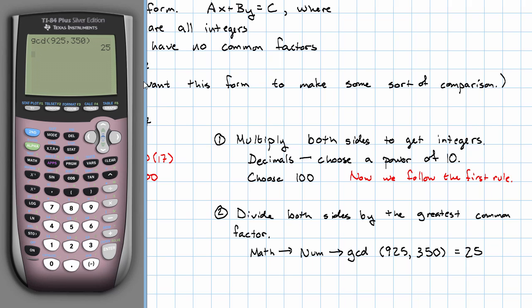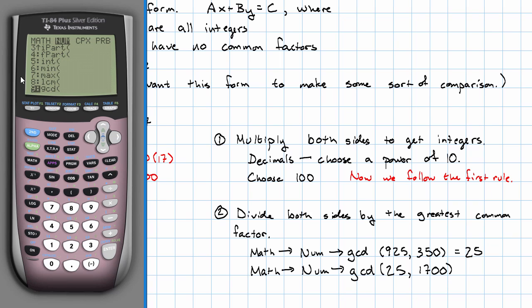Now I want to find the GCD of that number and the third number. In my equation, the third number is 1,700. So math, NUM, scroll to get GCD, 25, 1700.